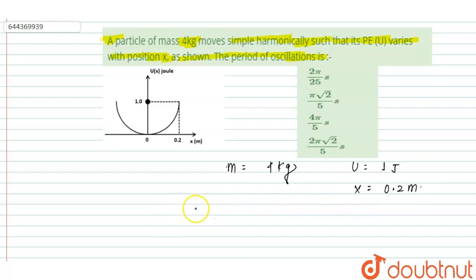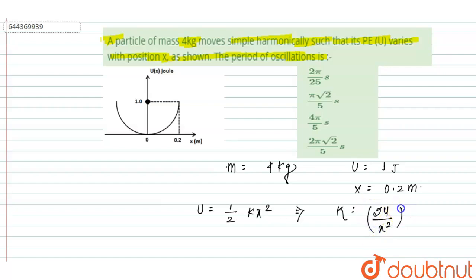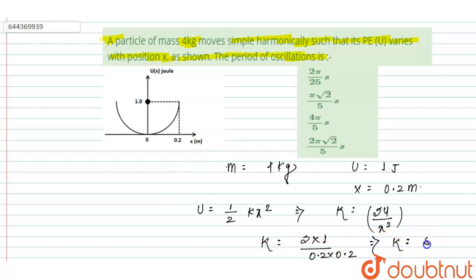Firstly we have to find the value of K. Since we know that U is equal to half K X squared, then K is equal to 2U upon X squared. Putting in the values, K is equal to 2 into 1 upon 0.2 into 0.2, and when we solve, we get K is equal to 50 N per meter.